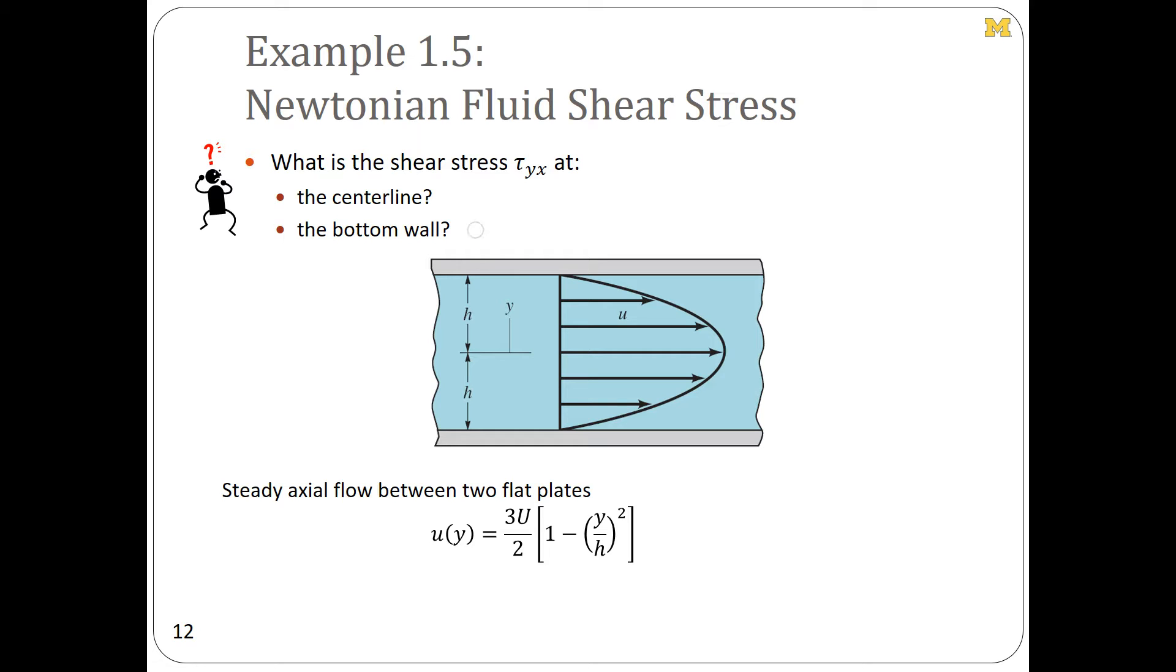We were given the flow velocity as a function of y, where y is measured positive upward from the centerline of flow. What we determined in class was that according to the equation for shear stress in a Newtonian fluid, tau_yx equals mu times du/dy.